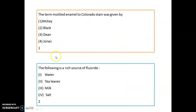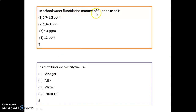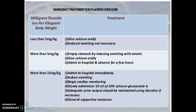The term mottled enamel was given by Frederick McKay. The main risk source of fluoride is tea leaves. In school water fluoridation, the amount of fluoride used is 3 to 4 ppm. For acute fluoride toxicity, use milk. Emergency treatment: less than 5 mg/kg — give calcium orally; more than 5 mg/kg — induce vomiting, give calcium orally, admit to hospital; more than 50 mg/kg — admit immediately, cardiac monitoring, give 10 ml of 10% calcium gluconate, and maintain adequate urine output.